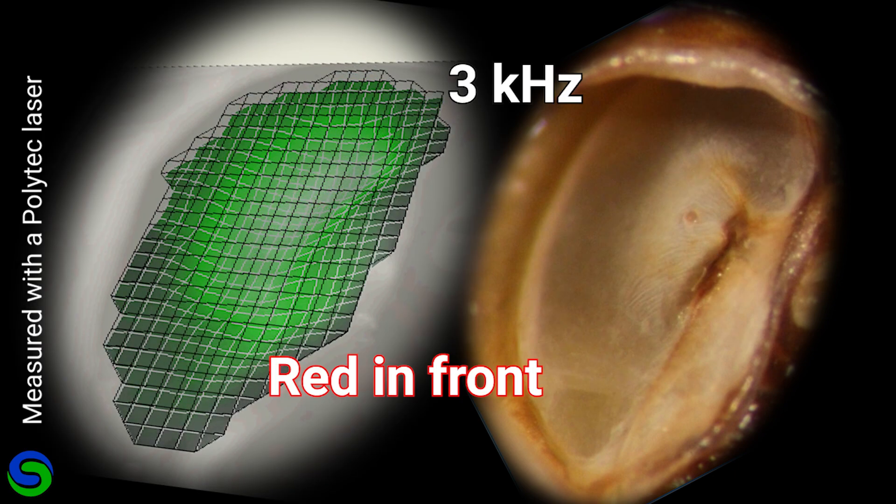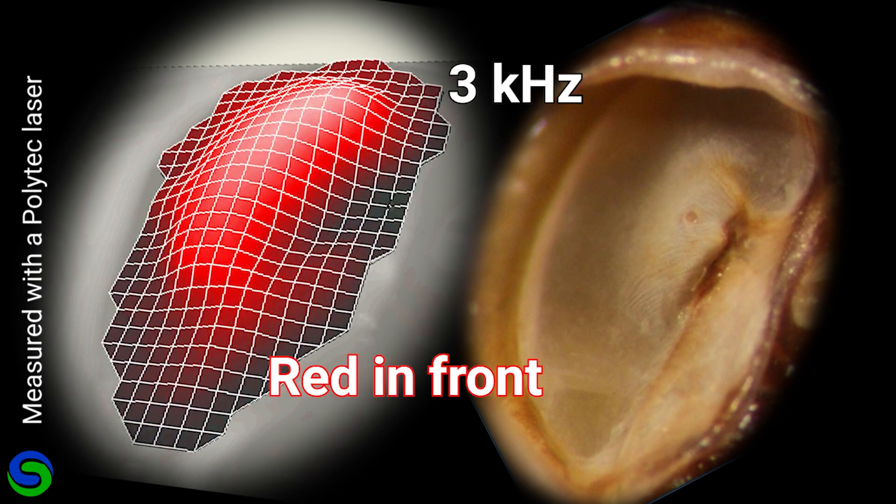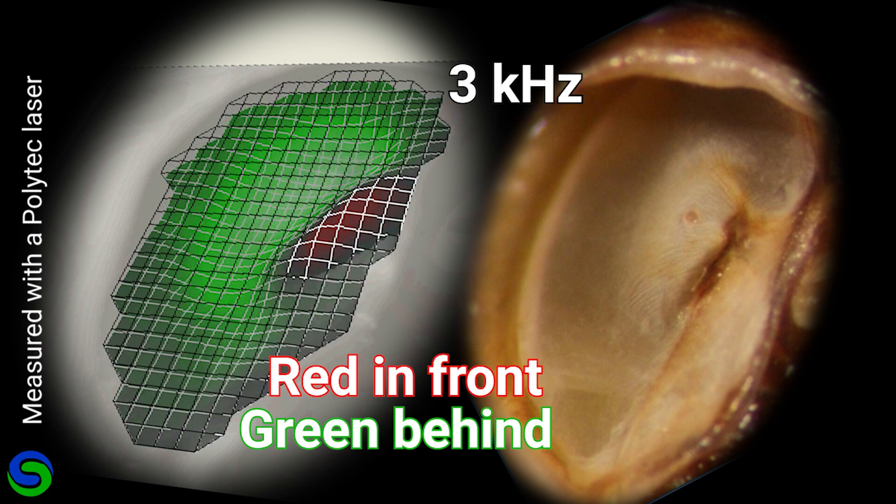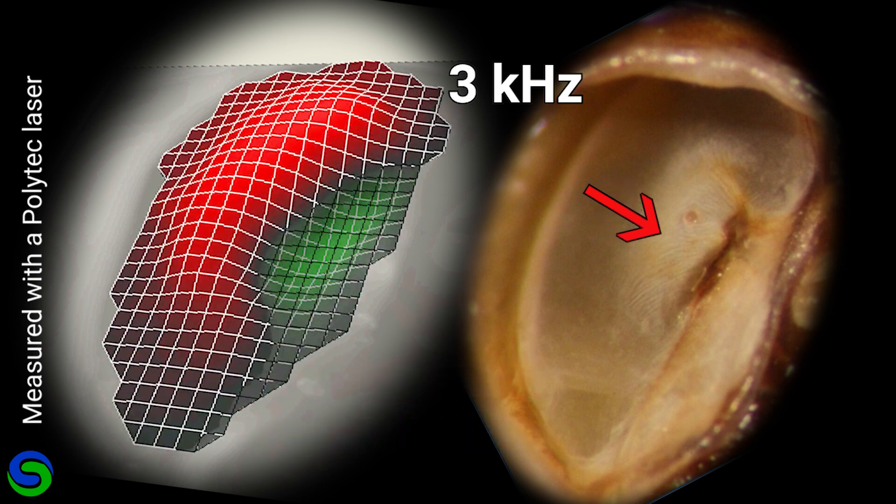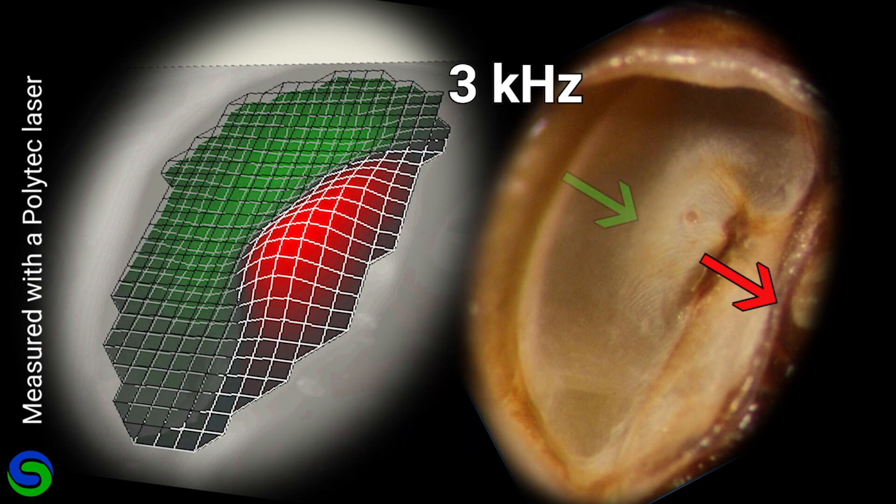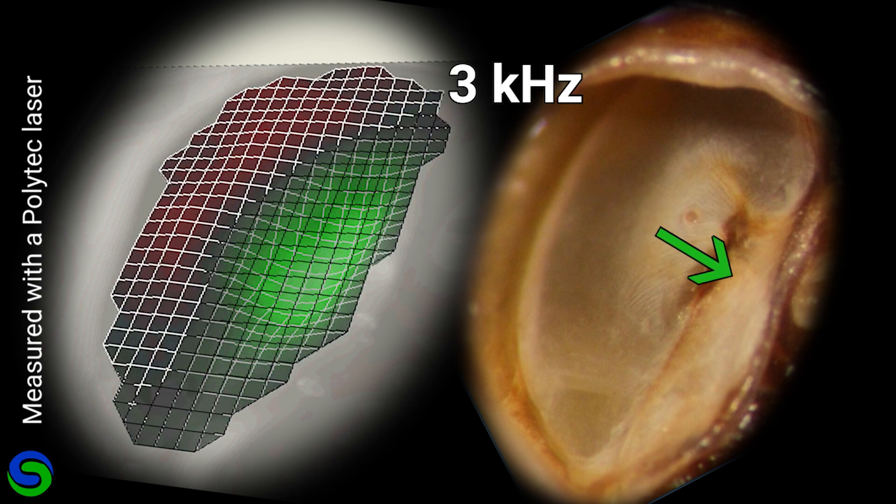In red, the scan shows the tympanal membrane moving in front of the grid and behind it in green. At 3 kilohertz, the traveling wave can be seen going across the tympana from the thin to thick membrane, always in this direction.